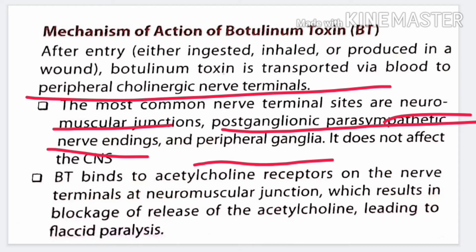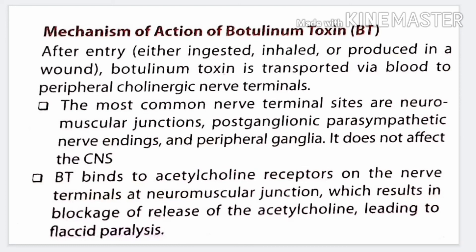The toxin travels to peripheral nerve terminals and binds at the acetylcholine receptors on the nerve terminal at the neuromuscular junction. All the information related to muscle contraction or relaxation is stored in acetylcholine. If that information is not released, no contraction occurs and the body enters a state of paralysis. The botulinum toxin blocks the release of acetylcholine, resulting in flaccid paralysis.